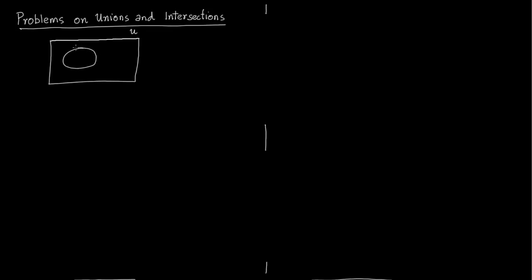Let us draw some figure — this we have already drawn before in previous slides. We have the universal set, set A, and set B. A minus B is all the elements which are in A but not in B. You can see it is everything in A except that small portion which is A intersection B.